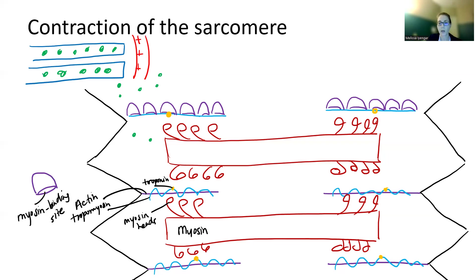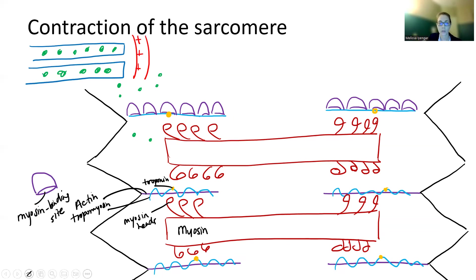This is a very hard process to draw because you have multiple things moving. It's not like I just bring sodium and potassium in different directions — I have to move the head of the myosin and then move actin. I'll post another video that actually shows the animation of how this works.